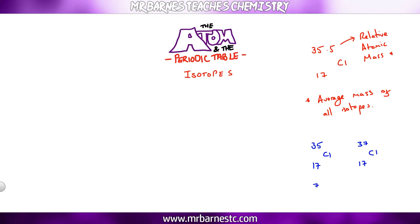So the definition of an isotope is it's something that has the same number of protons. So both these chlorines down here have got 17 protons but a different number of neutrons. The one on the left has 18 neutrons and the one on the right has 20 neutrons.